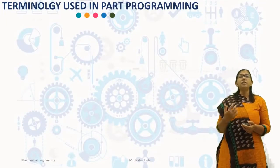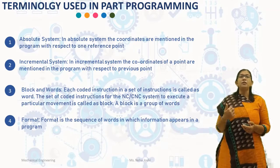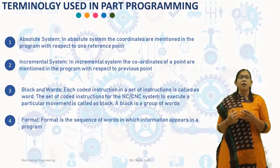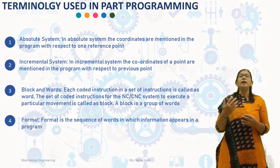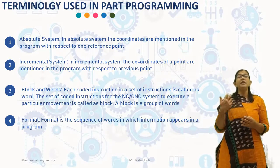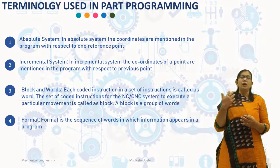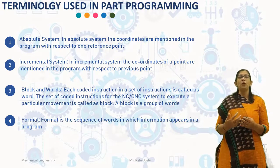We will discuss different terminology used in part programming. The first is absolute system. In the absolute system, the coordinates are mentioned in the program with respect to one reference point. The second is incremental system. In the incremental system, the coordinates of the point are mentioned in the program with respect to the previous point.